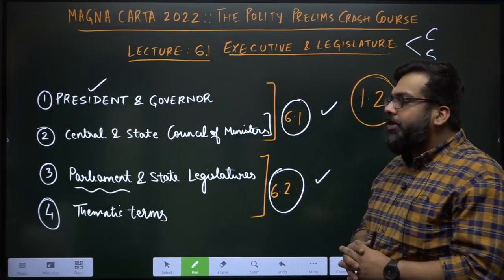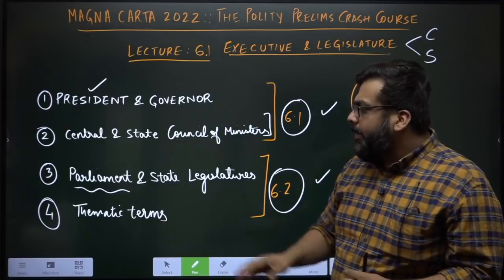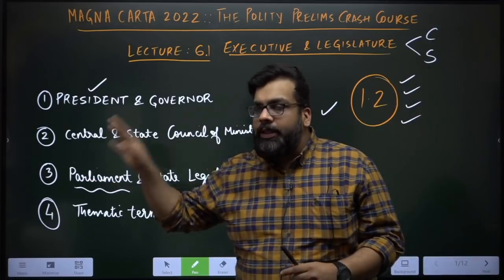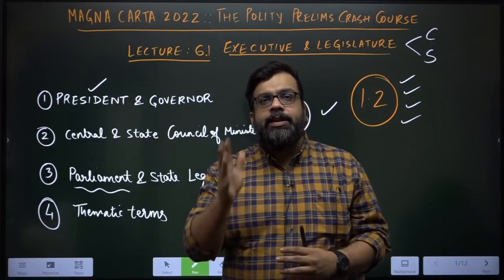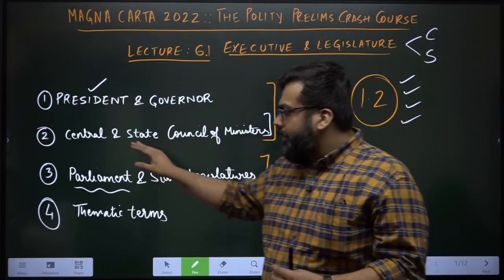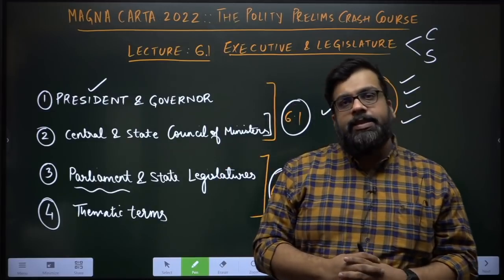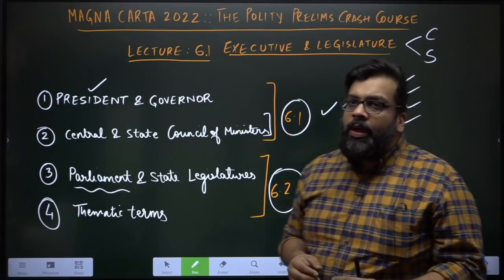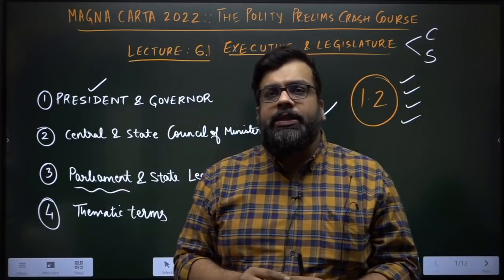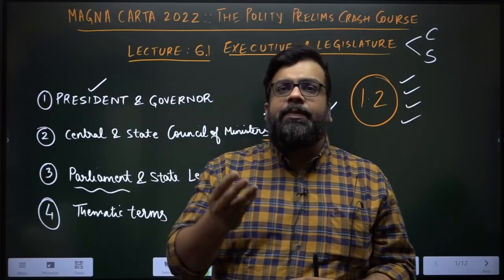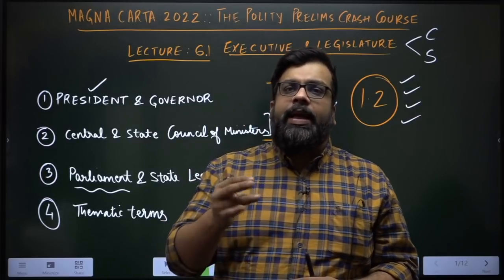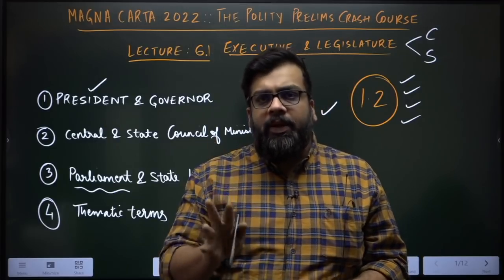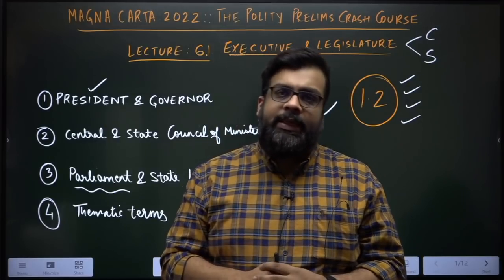Lecture 6.2 will cover Parliament and state legislatures, with greater focus on the procedures, functions, and processes of Parliament, as most questions come from there. We will close with a brief discussion on thematic terms such as parliamentary form of government, cabinet form of government, and parliamentary executive, as these are also commonly asked.